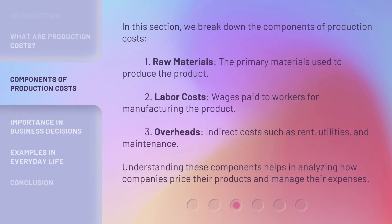In this section, we break down the components of production costs. 1. Raw Materials: the primary materials used to produce the product. 2. Labor costs: wages paid to workers for manufacturing the product. 3. Overheads: indirect costs such as rent, utilities, and maintenance. Understanding these components helps in analyzing how companies price their products and manage their expenses.